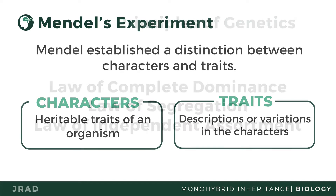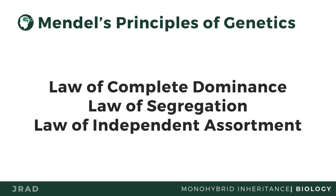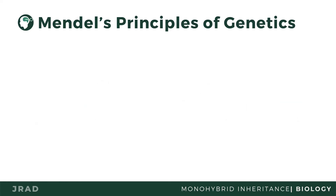Mendel's observations formed many of the modern bases for the concept of inheritance. His experiments eventually led to the proposal of three inheritance laws: the law of dominance, the law of segregation, and the law of independent assortment.